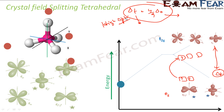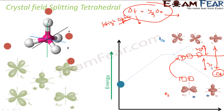Low spin is very rare in tetrahedral because the energy difference is small. The upper part of the tetrahedral splitting is 2/5 of Δt and the lower part is 3/5 of Δt. The upper set is dxy, dyz, and dxz, while the lower set is dx²−y² and dz².